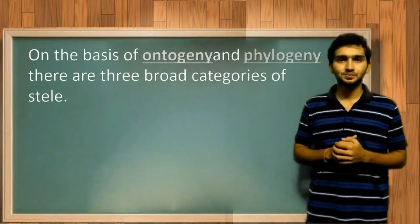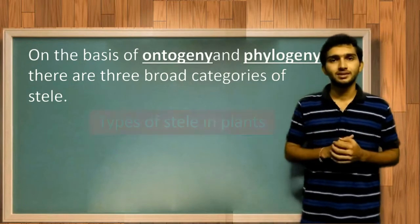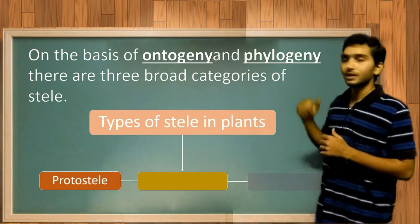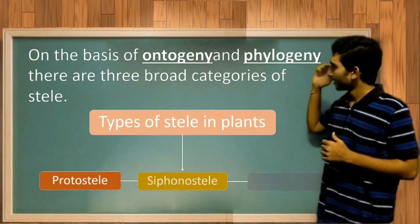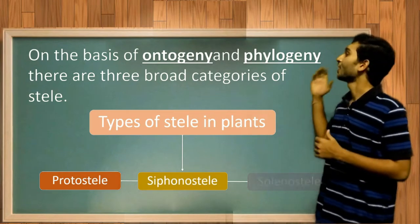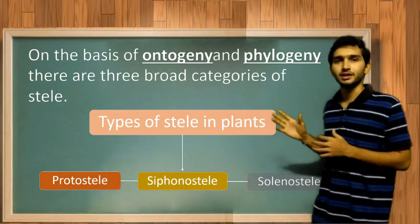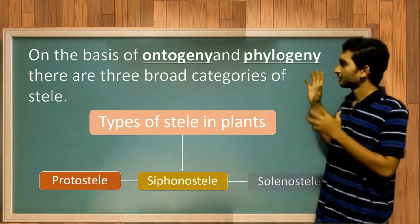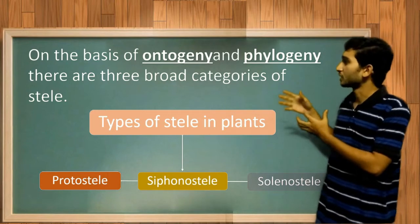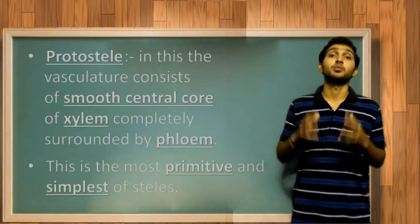There are three broad categories of stele based on ontogeny and phylogeny. They are: protostele, siphonostele, and solanostele. I am going to explain each in detail, as there are different types within each category. First, let's discuss what is protostele.